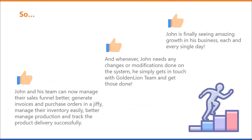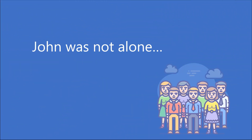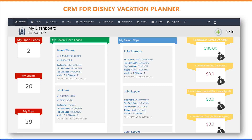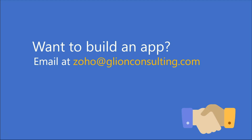John doesn't need a technical team anymore. Thanks to the robust system, they can now manage their sales funnel better, generate invoices and purchase orders quickly, manage inventory easily, and better manage production and track product delivery. Whenever John needs any changes or modifications, he simply gets in touch with the GoldenLand team. John is finally seeing amazing growth in his business every single day. Over the last eight years, we have built hundreds of custom applications for various businesses — packers and movers, real estate developers, event planners, migration agencies, and more. Want to build an app for your business? Send us an email at zoho@redlionconsulting.com. Thank you for watching this video and I look forward to serving you.